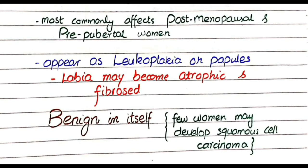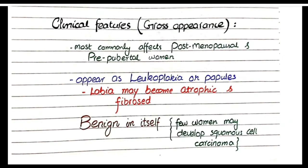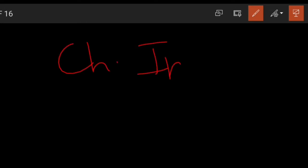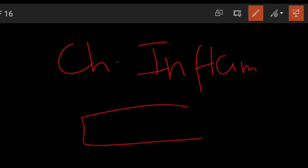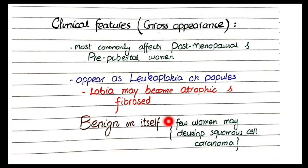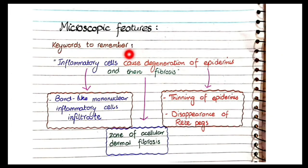Lichen sclerosis is benign in itself and usually does not progress to cancer, but a few women may develop squamous cell carcinoma. This is because, as studied in general pathology, chronic inflammation is an enabler of malignancy — it causes damage and releases growth factors that can increase the chances of neoplasia. So lichen sclerosis can increase the chances of carcinoma, but itself it is benign.